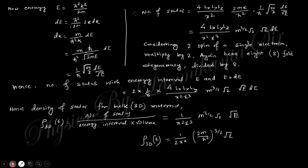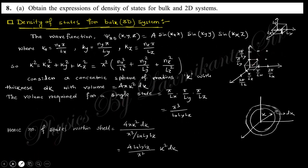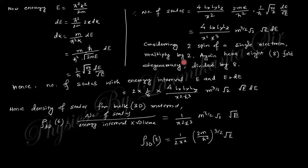This is the number of states within this cell. k can be replaced by E using the energy expression. Here you need to consider the two spin states of a single electron, and there is eightfold degeneracy. There are eight coordinates where the total energy is constant but the k values are different, so there's eightfold degeneracy. You divide by 8 and multiply by 2. The density of states is the number of states by energy and volume, so number of states per energy interval dE divided by dE and volume.